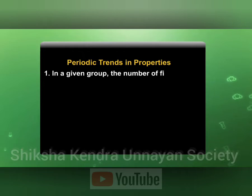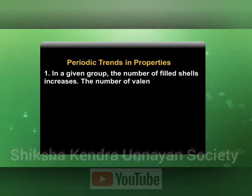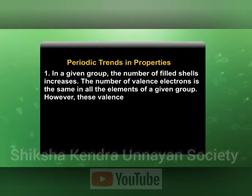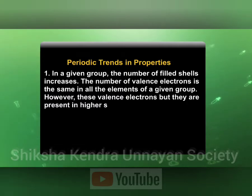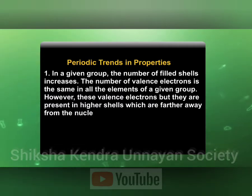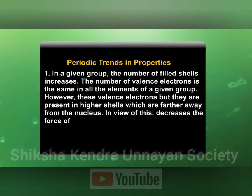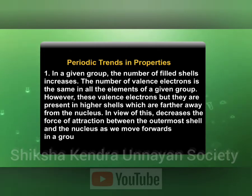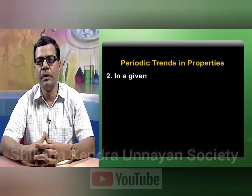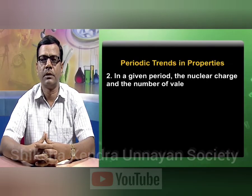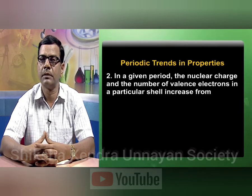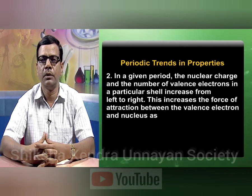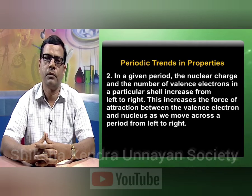In a given group, the number of filled shells increases while the number of valence electrons remains the same in all elements of a given group. However, these valence electrons are present in higher shells which are further away from the nucleus. This decreases the force of attraction between the outermost shell and the nucleus as we move down a group. In a given period, the nuclear charge and the number of valence electrons in a particular shell increases from left to right, which increases the force of attraction between the valence electrons and the nucleus as we move across a period from left to right.